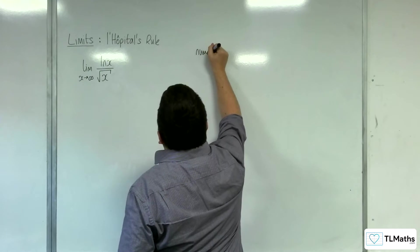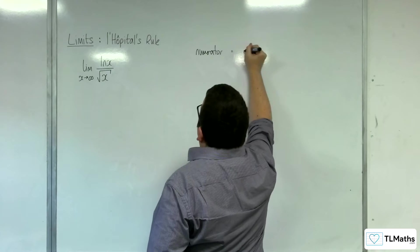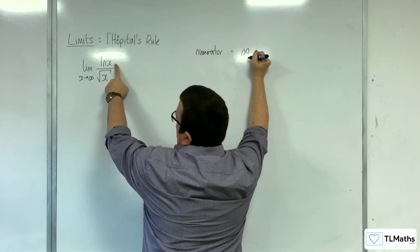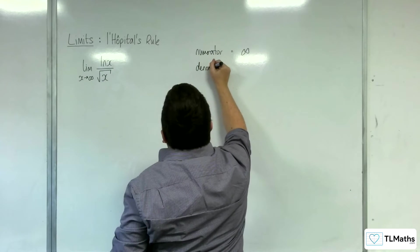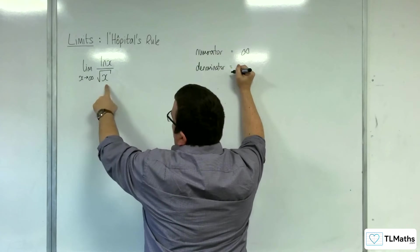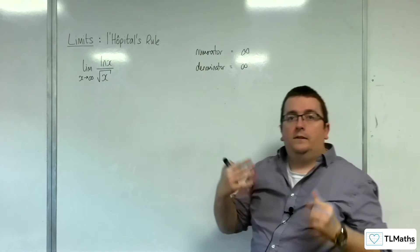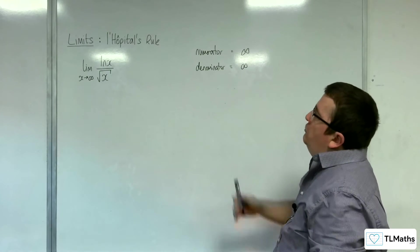Your numerator is going to be infinity, because as x tends to infinity, log of x will tend to infinity. And in the denominator, we've got root x, as x tends to infinity that will tend to infinity as well. So you've got infinity divided by infinity, and so you have an indeterminate form.